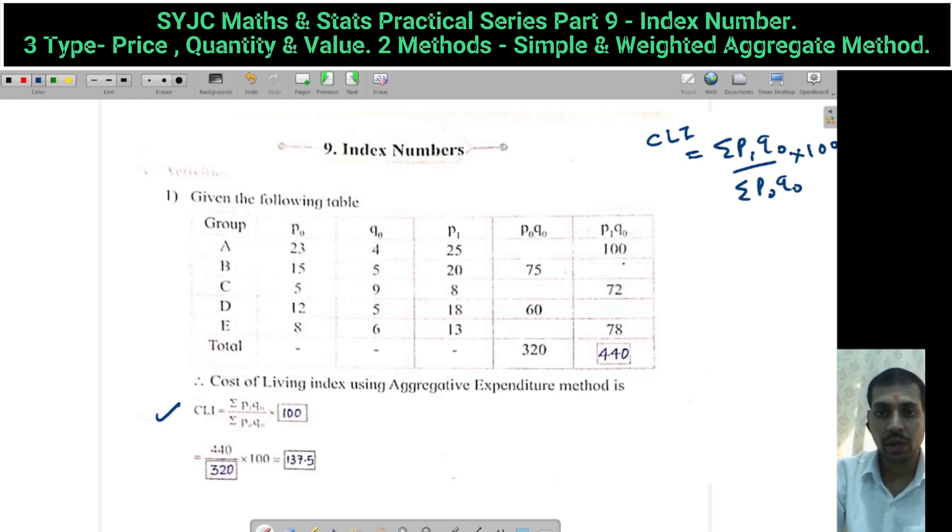Now calculate P1Q0. You can see: 8 times 9 is 72, 25 times 4 is 100, 18 times 5 is 90, 6 times 13 is 78. We add and get answer 440.